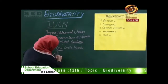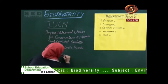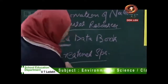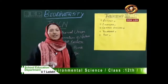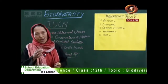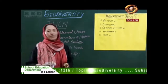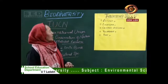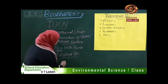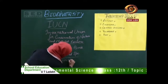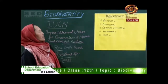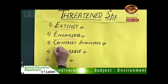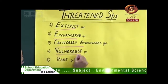Coming to threatened species — threatened species are those which we have to preserve now, so they may not become rare, critically endangered, or extinct in the future. IUCN has categorized threatened species into five broad categories: Extinct, Endangered, Critically Endangered, Vulnerable, and Rare.